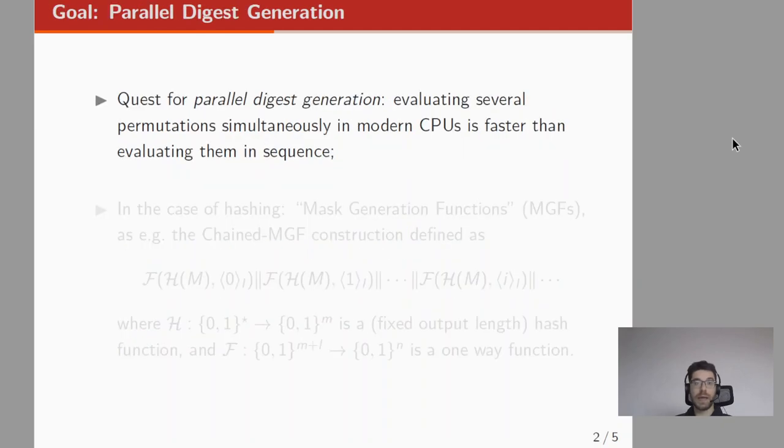Based on this we propose some concrete application in the context of parallel variable-length digest generation. Our goal is to set up a construction that allows for efficient parallel digest generation, because evaluating several permutations simultaneously in modern CPUs is faster than evaluating them in sequence.